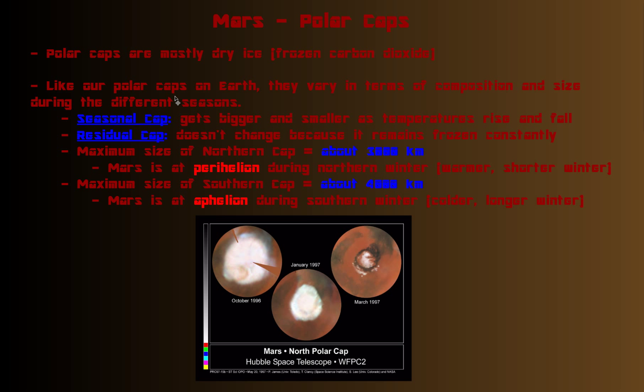Like our polar caps on Earth, the polar caps on Mars vary in terms of composition and size during the different seasons. Although on Earth they don't really vary in composition, it's more just the size. The seasonal cap varies during the seasons and gets bigger and smaller as temperatures on Mars rise and fall. Temperatures fall, it gets larger as CO2 freezes. As temperatures rise, it gets smaller as CO2 goes into the atmosphere.